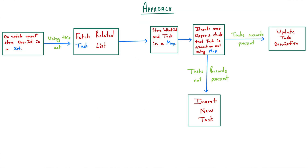Now let's talk about our approach for this scenario. First, we will create a set in which we will store opportunity IDs on update operation. After that, we will use that set to fetch the related task record, and we will store the WhatId and task record in a map. For those who don't know, WhatId on a task represents the object that the task is related to — it could be account, opportunity, or any other object. If a task is related to an opportunity, then the WhatId field will contain the opportunity ID, and this task will be displayed on the opportunity activity history. After storing records in the map, we will iterate over opportunities and check if a task record is already present. If it is present, we will update its description. If not, we will insert a new task.